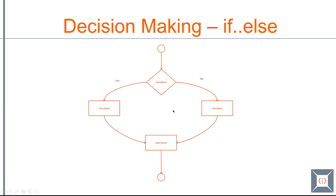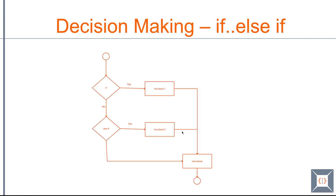We also have if-else. If-else is basically used to specify an alternate path for failure of the condition. If the condition is met the if block will be executed. If the condition is not met the else block will be executed. In either case the next block will always be executed.